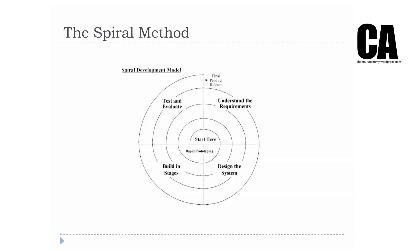So the spiral method started off where you understand the requirements, you design the system, you build in stages, you test and evaluate, and you go around and around again in a spiral. Changes to waterfall resulted in this method, which allowed for prototyping and incremental product design — very much closely following the way that we work as designers. You start off with a rough sketch and then you refine, refine, refine.